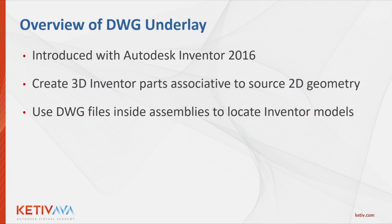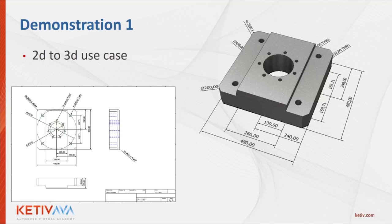This is really to create 3D Inventor parts or assemblies that are associative to the source 2D AutoCAD data. In assemblies, we typically use it as a skeleton where you can create constraints and joints, which lets you easily locate your Inventor models. To demonstrate this, I'll do two different use cases. In the first, we'll take an existing AutoCAD drawing — a simple drawing with drawing views, dimensions, annotations, and a title block — and show how to bring that into Inventor to associatively create a 3D model.